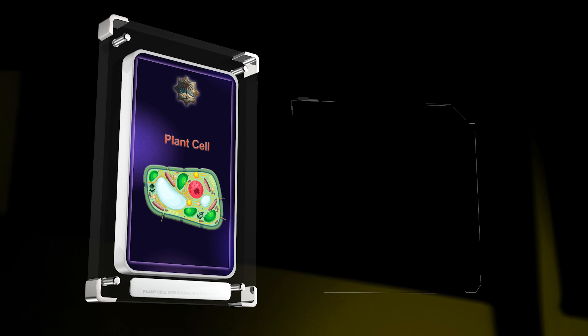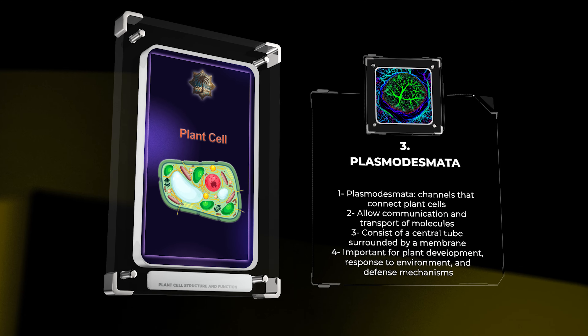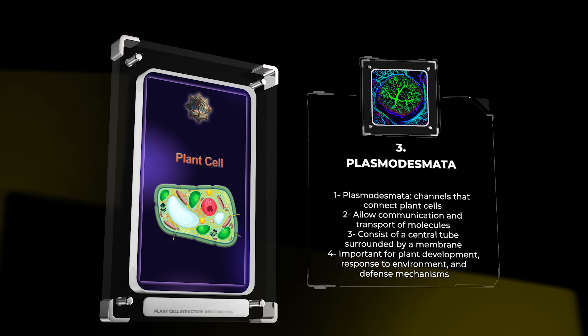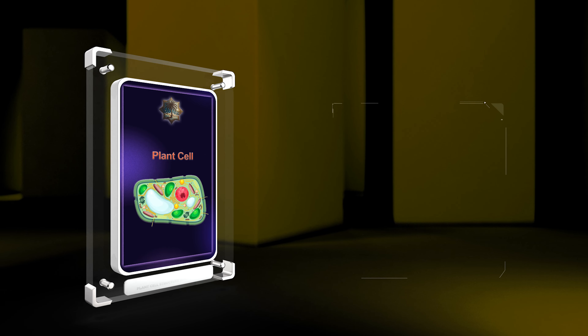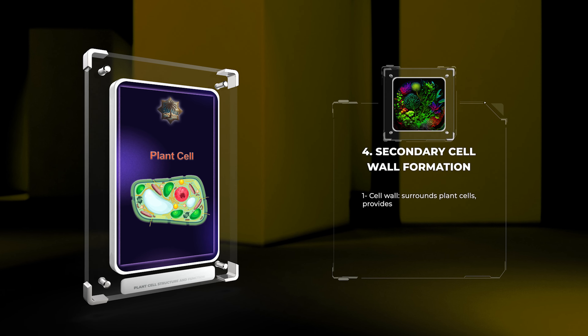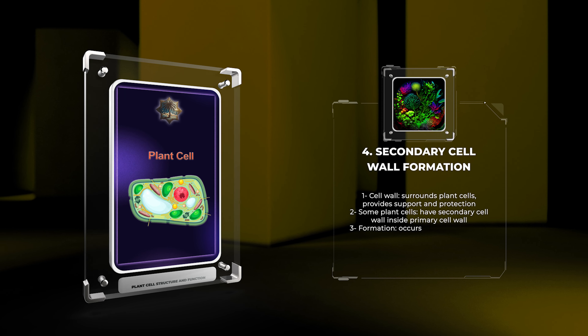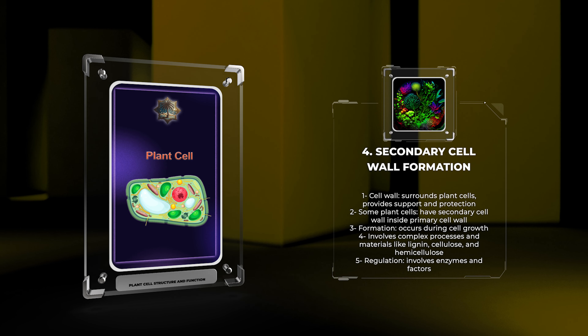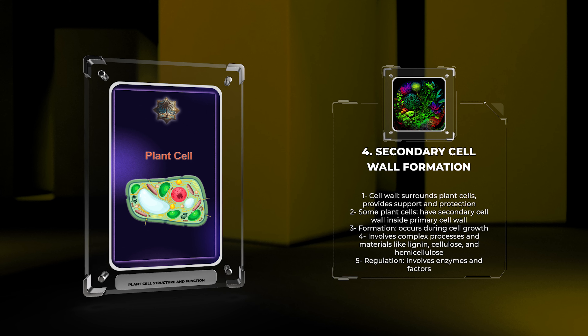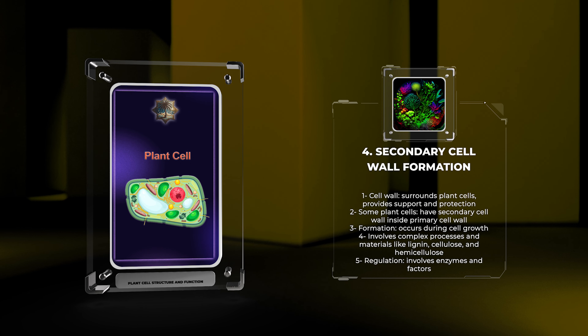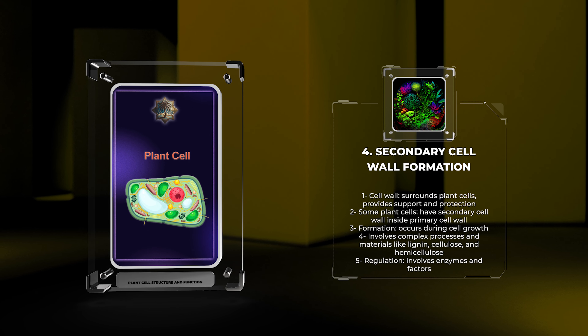Plasmodesmata are channels that connect plant cells, allowing communication and transport of molecules. They play a crucial role in coordinating cell activities. Plasmodesmata consist of a central tube surrounded by a membrane, allowing exchange of small molecules and macromolecules between cells. These channels are important for plant development, response to the environment, and defense mechanisms.